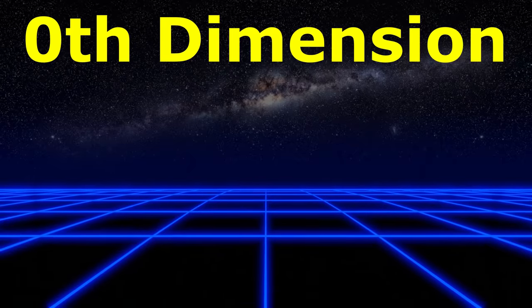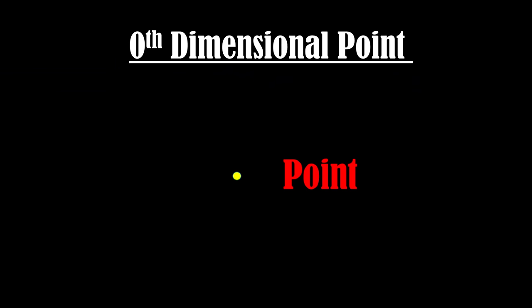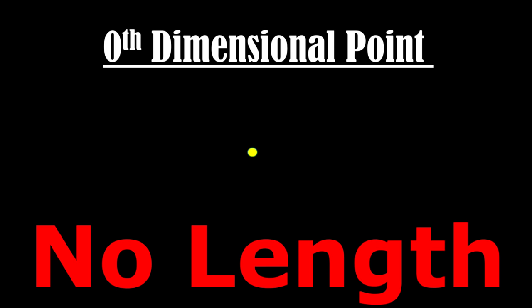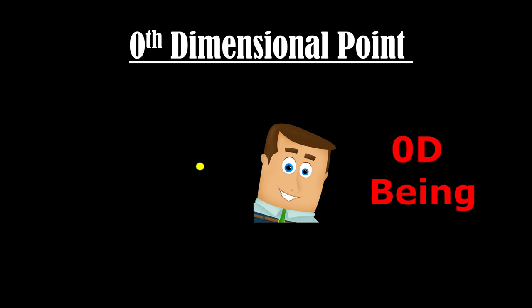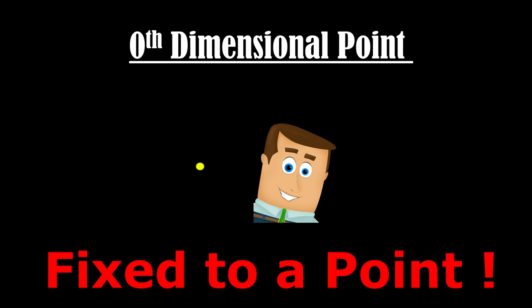Zero dimension. A point is an example of the zeroth dimension that has no length, no breadth, and no height. A zero dimensional being cannot move in any direction and is fixed to a point.